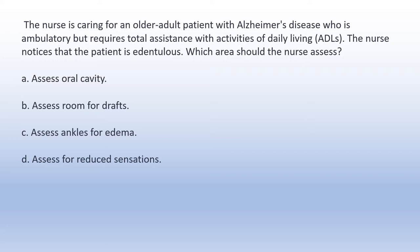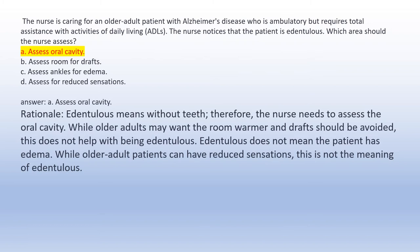A nurse is caring for an older adult patient with Alzheimer's disease who is ambulatory but requires total assistance with activities of daily living (ADLs). The nurse notices that the patient is eating edentulous. Which area should the nurse assess? A. Assess oral cavity. B. Assess room for drafts. C. Assess ankles for edema. D. Assess for reduced sensations. Answer A: Assess oral cavity. Rationale: Edentulous means without teeth; therefore, the nurse needs to assess the oral cavity.